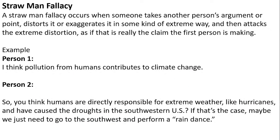Straw man fallacy: someone takes another person's argument and exaggerates it to an extreme. For example, one person says 'only pollution from humans contributes to climate change,' and the other exaggerates by saying 'so you think humans caused all hurricanes and the drought in the southern US? Maybe we should go perform a rain dance.' This is a straw man fallacy — exaggerating and misrepresenting the original argument.